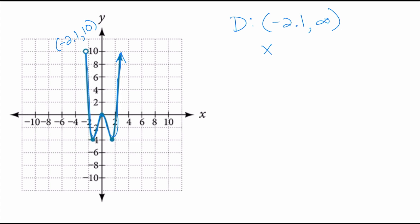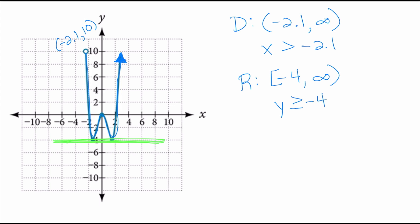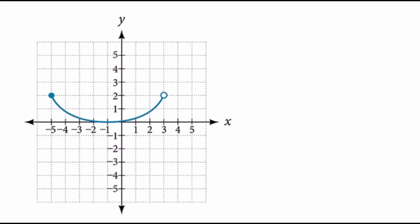For the range, which are the y-values: the lowest y-value the graph ever takes on is negative 4, and it does include negative 4. Because of the arrow pointing right, the graph goes toward positive infinity. So I want all y-values greater than or equal to negative 4.